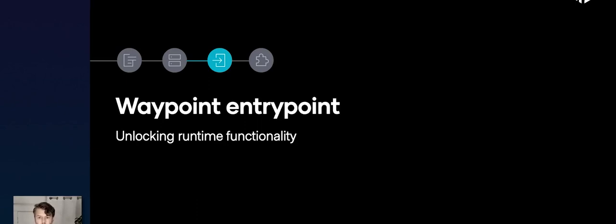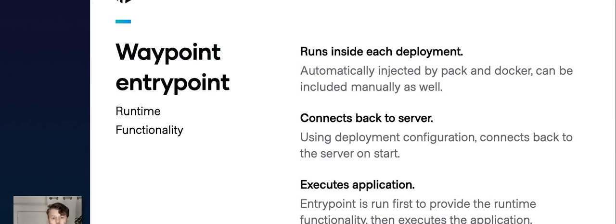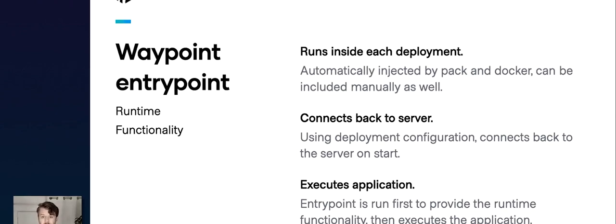Let's take a look at the Waypoint entry point, which we talked about earlier with some runtime functionality. The entry point runs inside your deployments — it's a process running alongside your application. It connects back to the server using deployment configuration about the address and credentials, and then it executes your application on your behalf. In that way it can sit in front of your application to provide things like log management, configuration, and general monitoring.